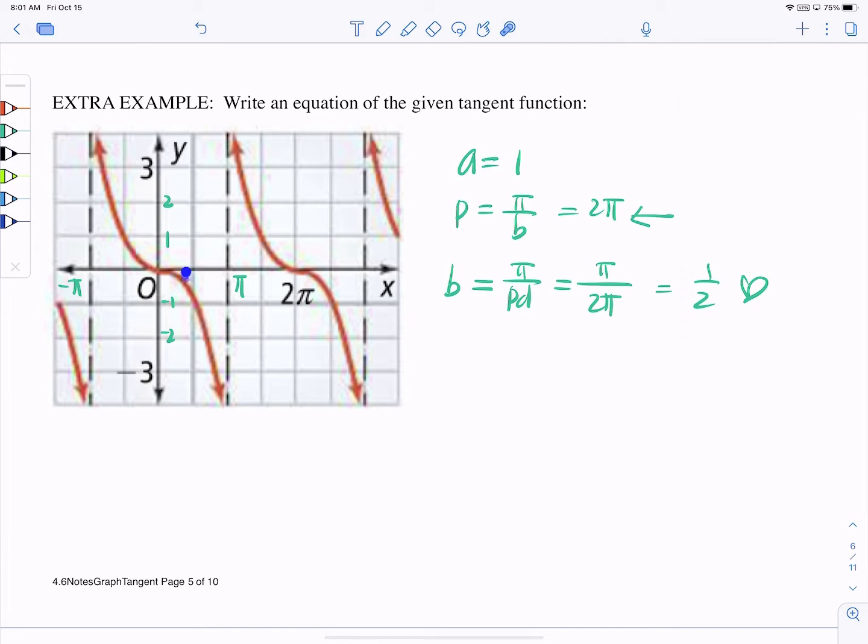But your normal tangent graph goes like that, right? Because tangent of π/2 is going to be positive, but it became a negative, so everything flipped. So hopefully you understand that there was a reflection.